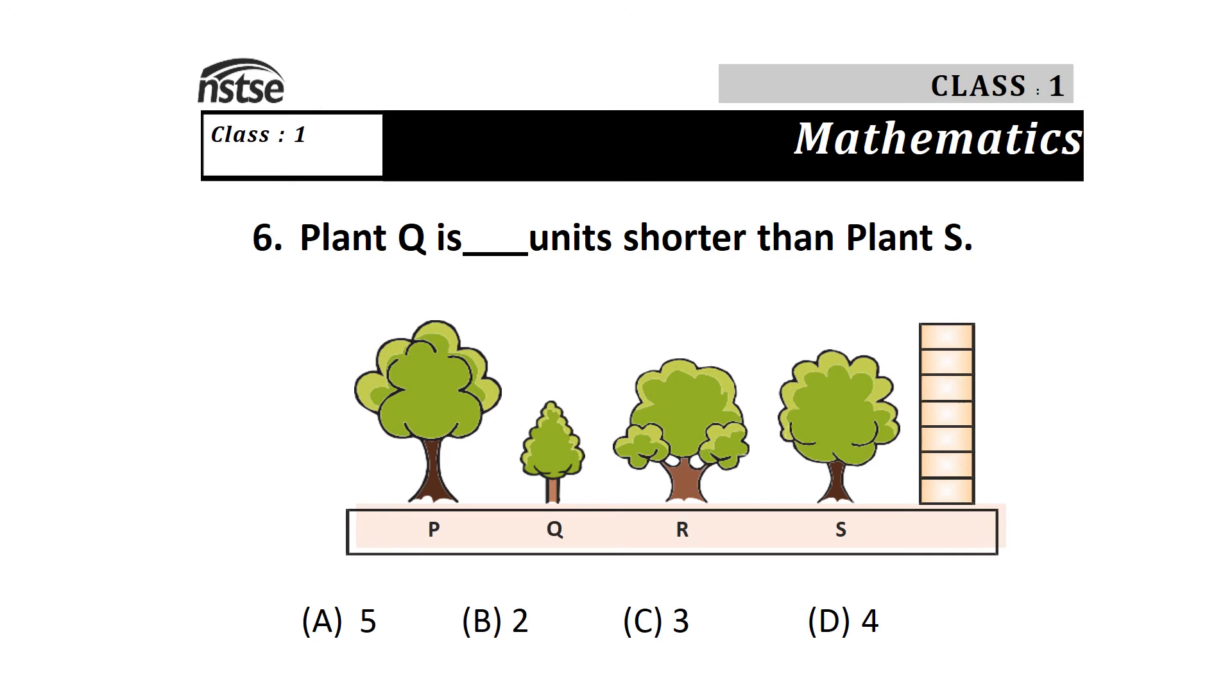Question 6: Plant Q is how many units shorter than plant S? Options are A) 5, B) 2, C) 3, and D) 4. You can count, and it is 3 units shorter, so the answer is C.